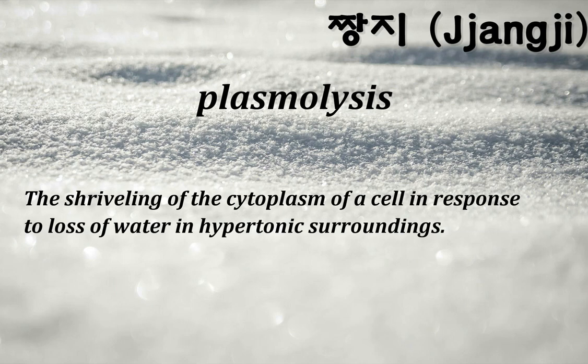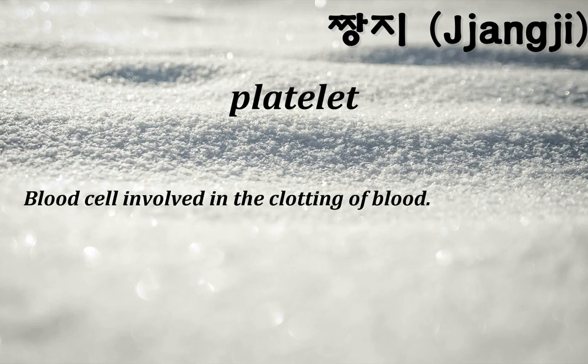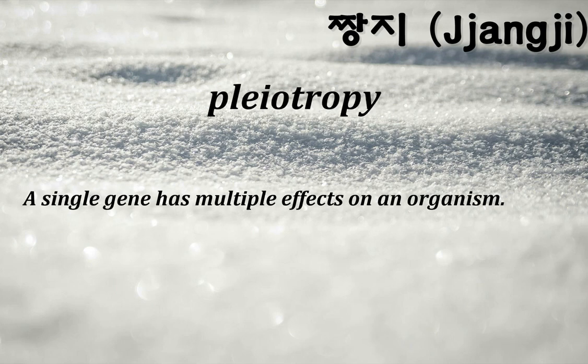Plasmodium: this word has two meanings — it can be the causative agent of malaria, or it can be the clumped unicellular mass that fungi form under certain feeding conditions. Plasmolysis: the shriveling of the cytoplasm of a cell in response to loss of water in hypertonic surroundings. Platelet: blood cell involved in the clotting of blood.